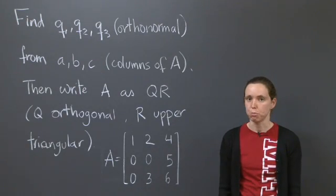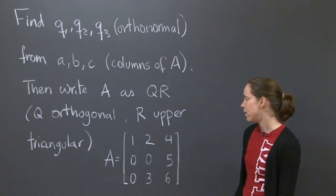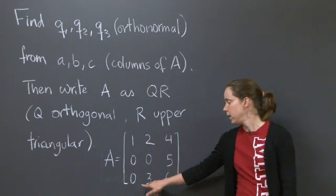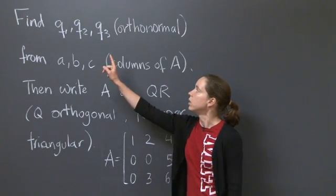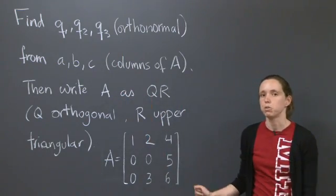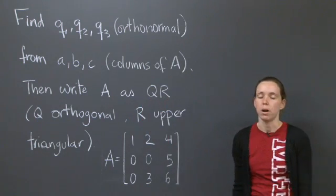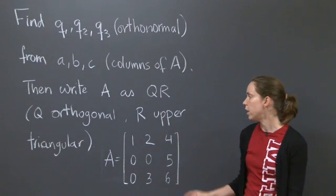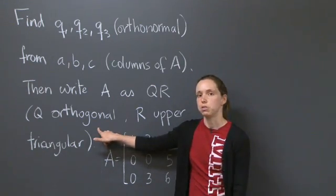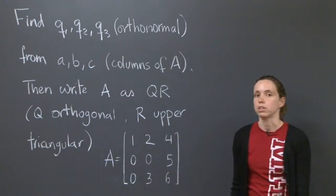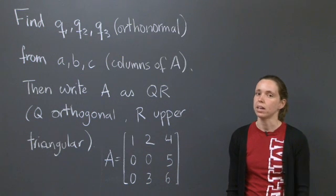In lecture, you've learned about Gram-Schmidt orthogonalization, and that's what today's problem is about. We have a matrix A, and its columns are a, b, and c. I want you to find orthonormal vectors Q1, Q2, and Q3 from those three columns. Then, I want you to write A as its QR decomposition, where Q is an orthogonal matrix and R is an upper triangular matrix. Remember, an orthogonal matrix is a matrix whose columns are orthonormal vectors. All right, work on it for a little while, hit pause, and when you're ready I'll come back and we'll do it together.